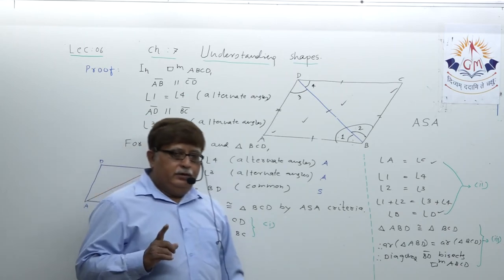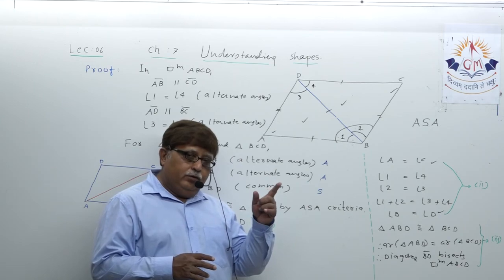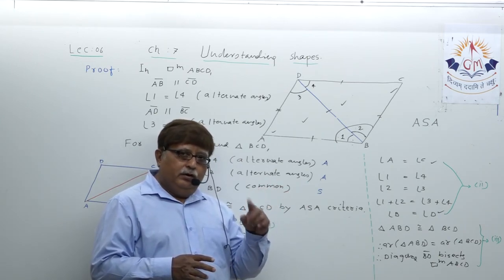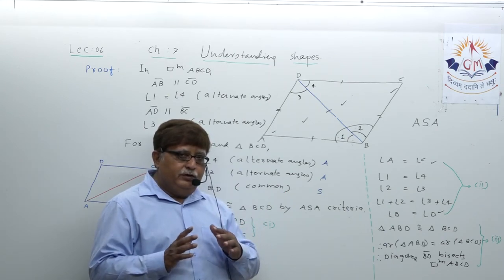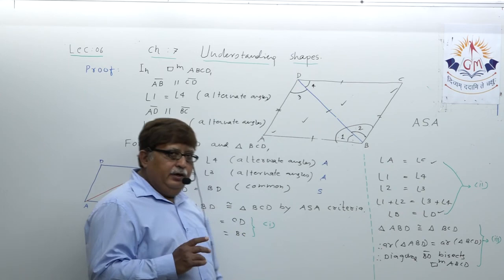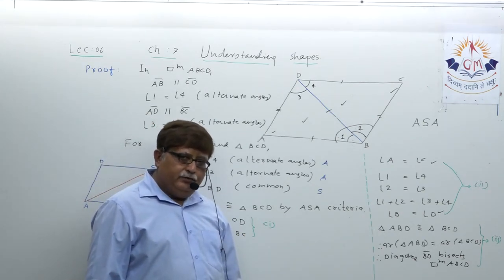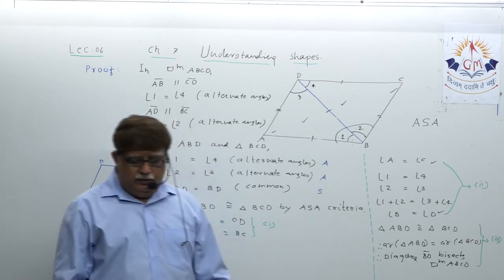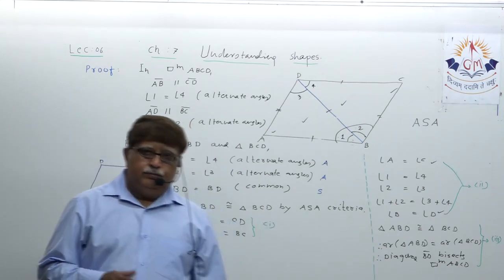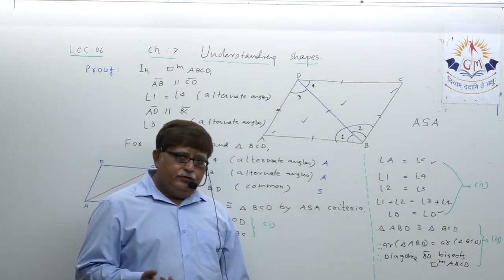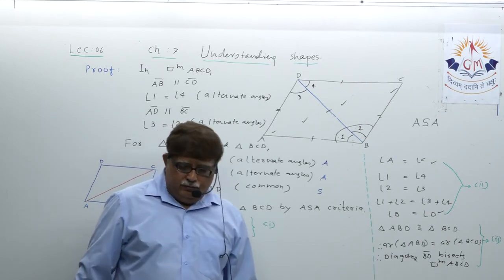This is the theorem, dear student. You can understand the importance of those concepts — alternate angles, the ASA criterion — how they were used. The rest of the theorems we will prove in our next lecture. As I told you in the start of this chapter, this is actually the basic concepts of geometry where you need to apply your logic to understand and solve theorems.